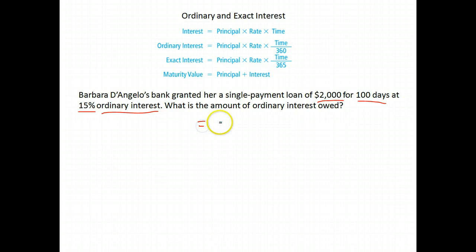So on this one, all we have to find is the interest. We take our principal, which was $2,000, times our rate. Our rate's 15%, move the decimal two places to the left, we get 0.15 times the amount of time. It's 100 days out of 360.